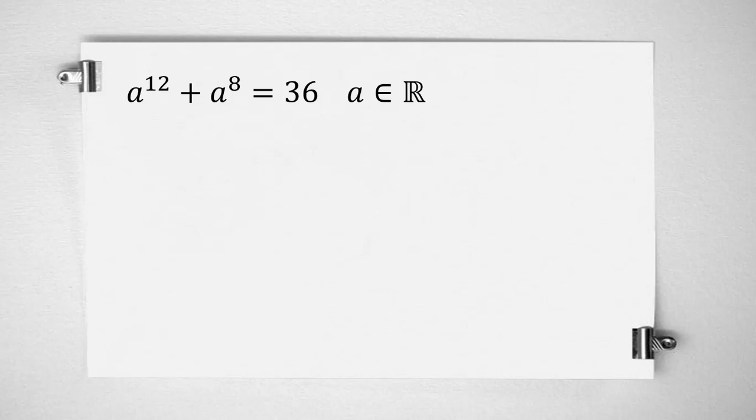a to the 12 plus a to the 8 equal to 36, a is a real number. We want to find a.